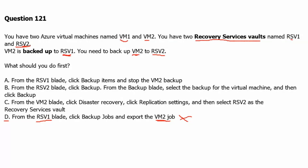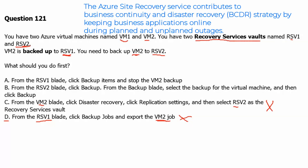Option C: From the VM2 blade, click disaster recovery, click replication settings, and then select RSV2 as the recovery service vault. This answer is wrong because this is applicable for disaster recovery or to choose the secondary site on a different region. So this is not applicable for backup.